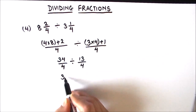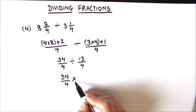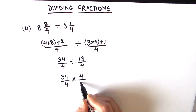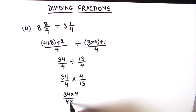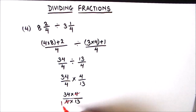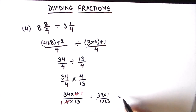Now we divide the two fractions: 34 upon 4, the division sign changes to multiplication, and 13 upon 4 is flipped to 4 upon 13. So we have 34 times 4 in the numerator and 4 times 13 in the denominator. There is a common factor of 4 between numerator and denominator, leaving 34 times 1 over 1 times 13. Our final answer is 34 upon 13.